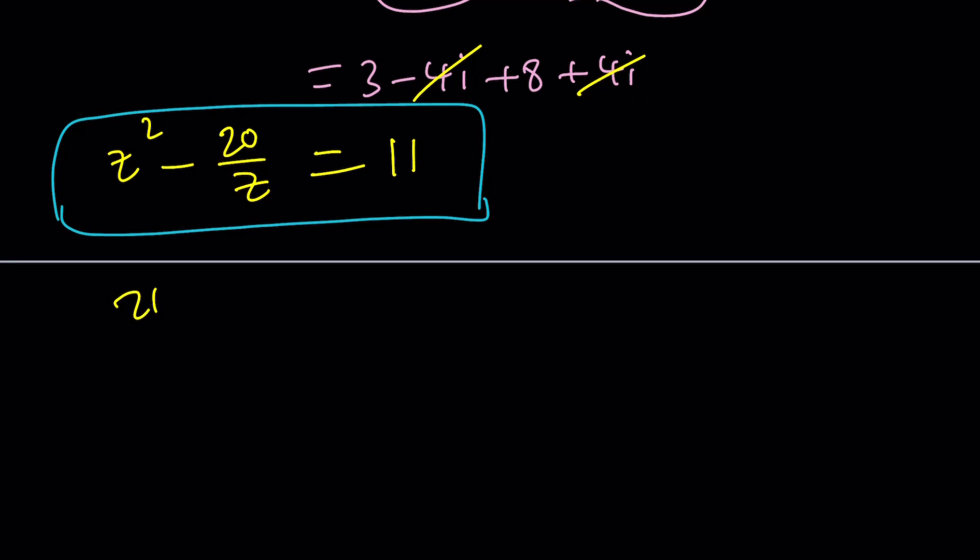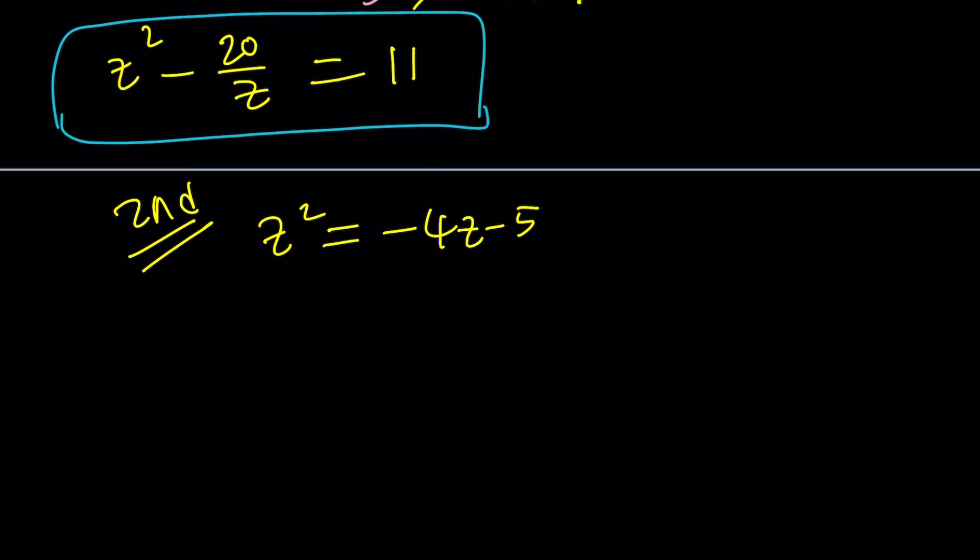Let's go ahead and take a look at the second method. So for my second method, obviously, I'd like to do something different. Let's go ahead and isolate z squared. And that's going to be z squared equals negative 4z minus 5. And from here, we're going to do the following.